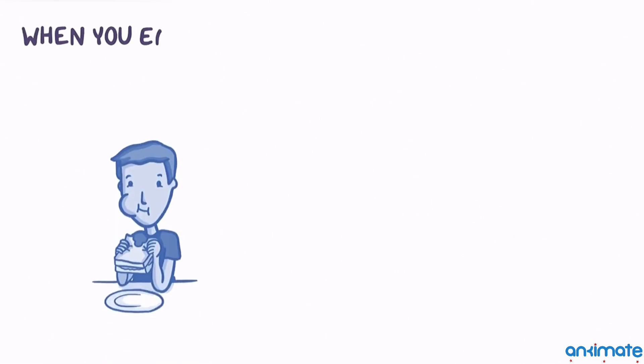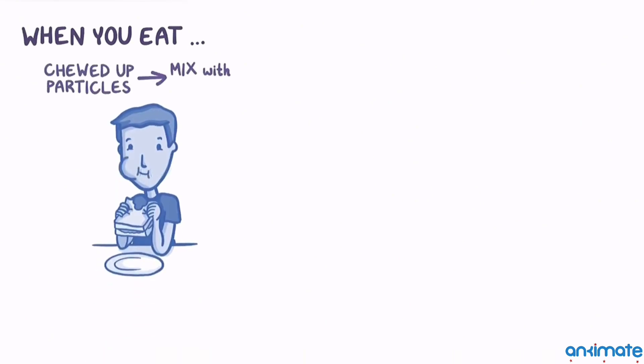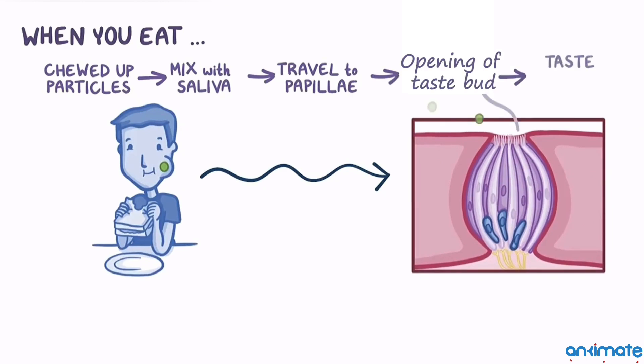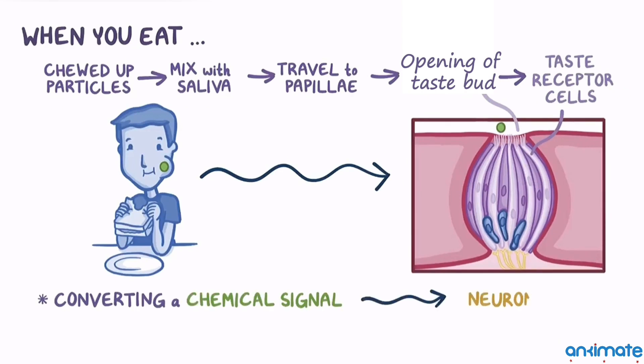When chemicals from food dissolve in saliva, they enter the taste buds through a small opening. The taste receptor cells convert the chemical signal into a neural impulse.